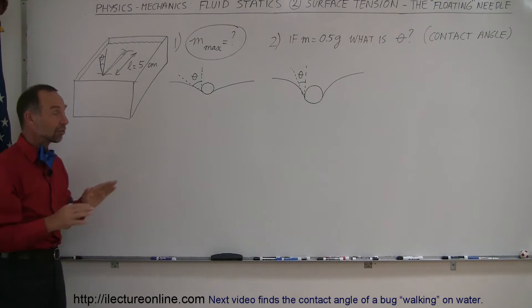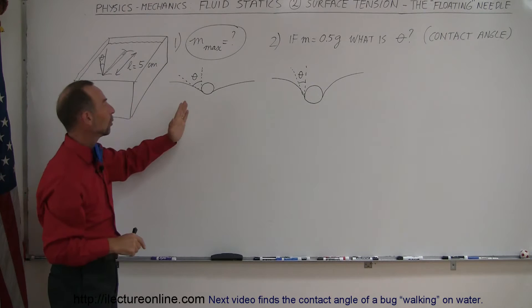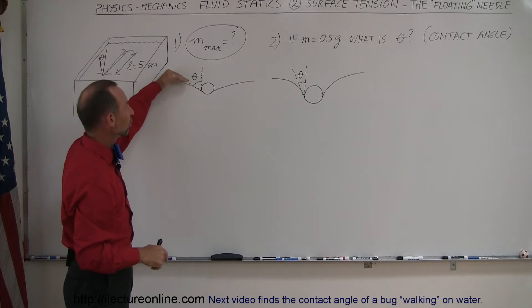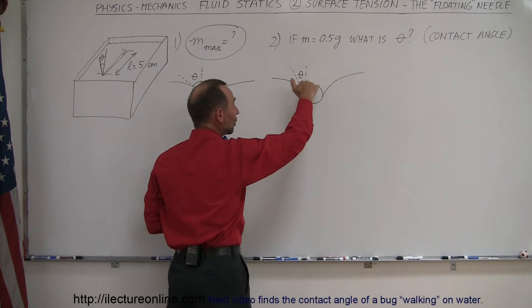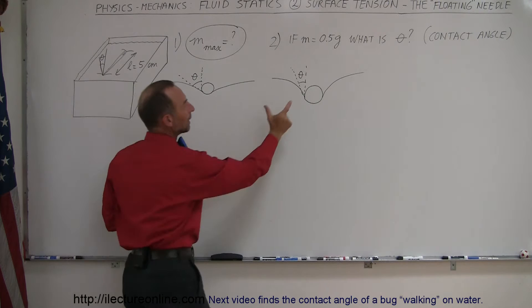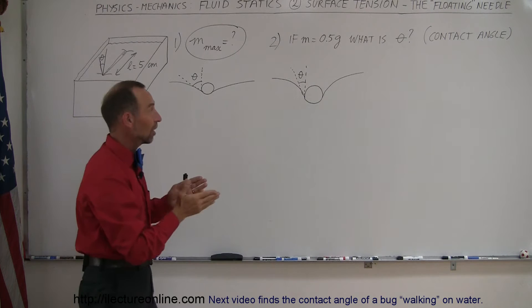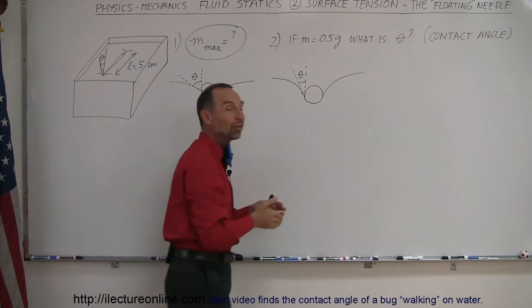For example, a needle very carefully placed on top of water can actually stay on top. It will appear to indent the water a little bit, making what we call a contact angle between the surface of the needle and the surface of the water. The heavier the needle, the further it will sink and the deeper the indentation, so the contact angle becomes smaller. Eventually at maximum surface tension strength, this contact angle will go to zero, and if the object is any heavier it will simply break through the surface and sink.